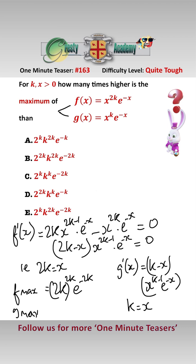i.e. g_max is equal to k^k e^(-k). And what we want is how many times higher is f_max than g_max.